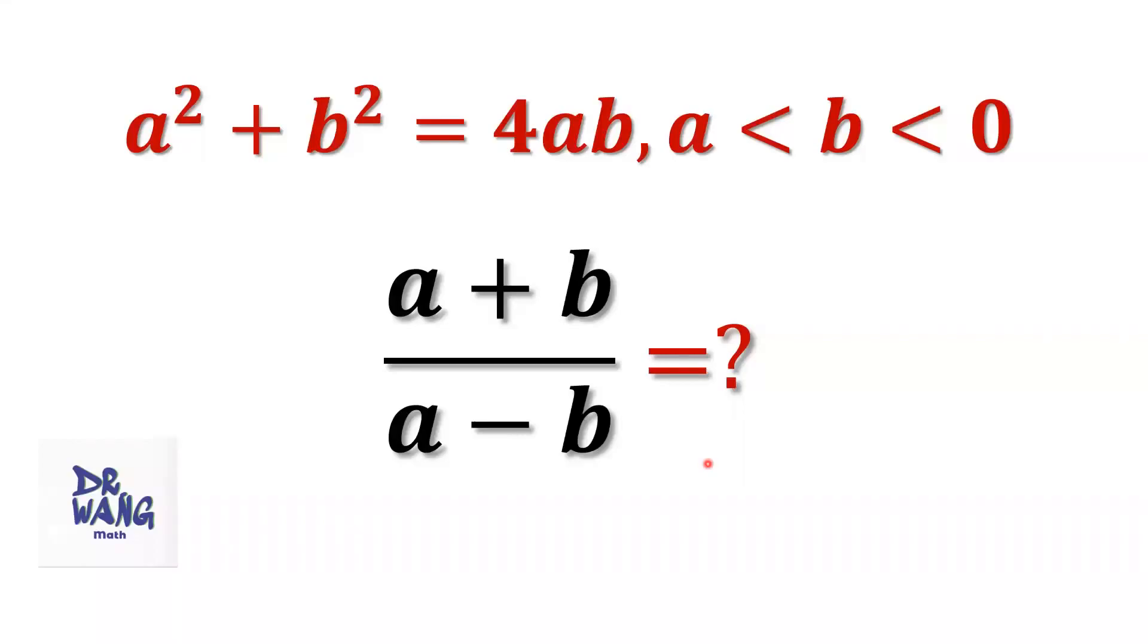Hello everyone, I'm Dr. Wang. Here is the question. If a squared plus b squared equals 4ab, a less than b less than zero, what is the value of a plus b over a minus b?